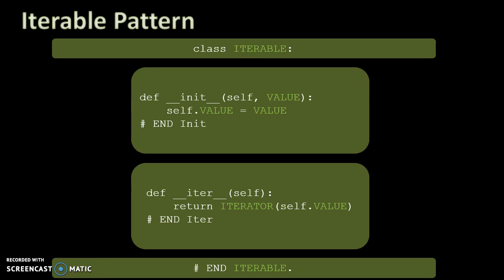The iterable class, to convert each element into an iterable thing, has two methods: an __init__ and an iter method. The __init__ method simply saves whatever value is passed in into the current object — self.value gets whatever value is passed in. Then the iter method in the iterable class returns an individual value that's iterable now, by calling the iterator class.